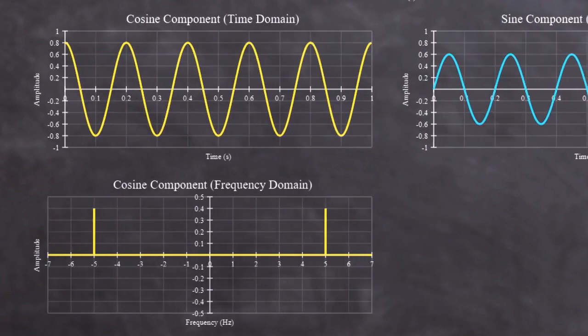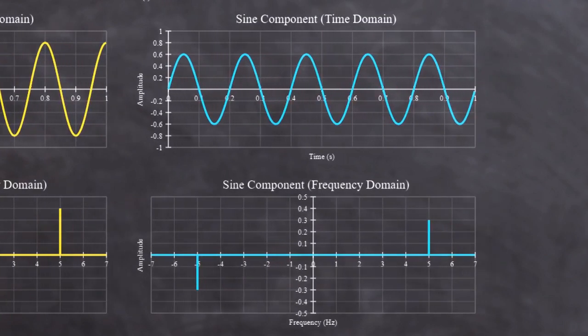Looking at the frequency domain representation of the sine component, something similar happens. At the 5 Hz frequency, the amplitude is half of that shown in the time domain graph. But at minus 5 Hz, the amplitude is minus a half of the time domain amplitude.